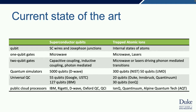For trapped atomic ions, the internal states of the atoms are the qubit. We use microwaves or lasers to control them, and we can use the motion to create two-qubit gates between them. Quantum simulators have reached up to 300 qubits at NIST. Universal quantum computers are around 20 to 30 qubits at the time of this talk. Public cloud processors for ion traps are available from IonQ, Quantinuum, and Alpine Quantum Technologies.